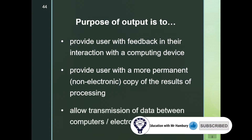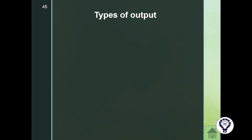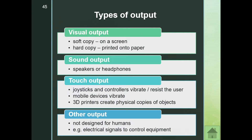We have different types of output. We have visual output — and these are terms that usually get asked — your soft copy and your hard copy, our sound output, our touch screen or touch output, and we have other output as well. Go through the four categories and make sure you understand what is being meant by each as we go further through this module.